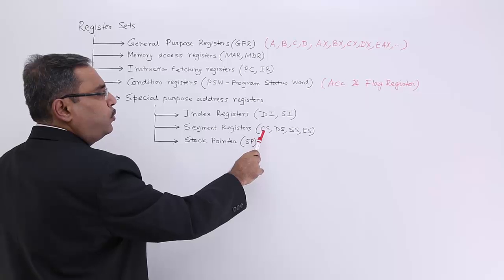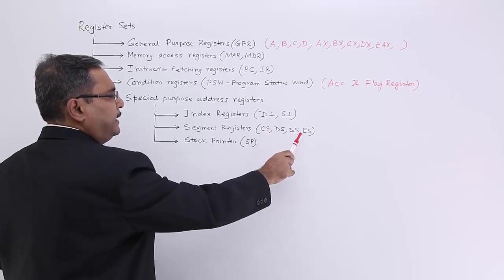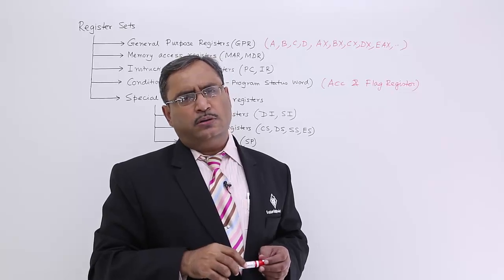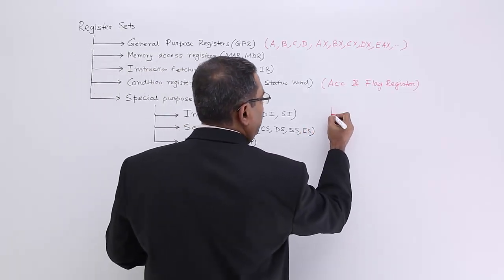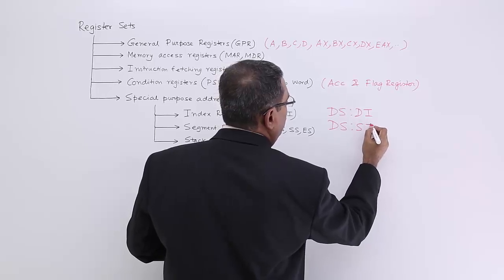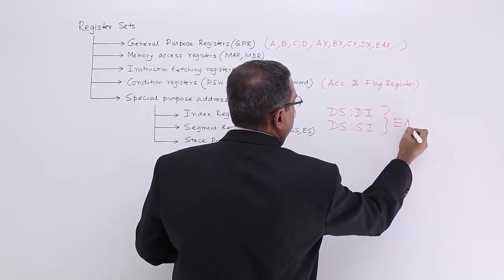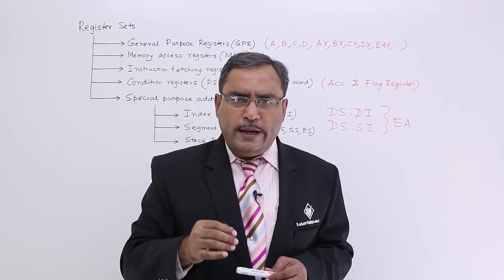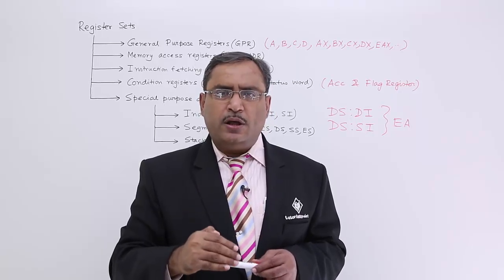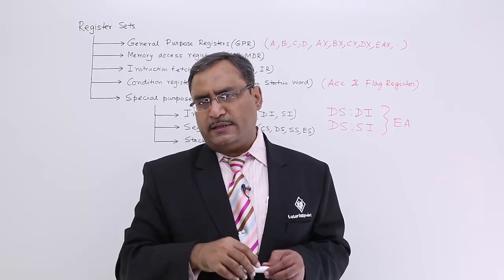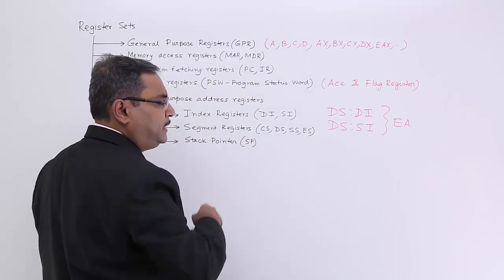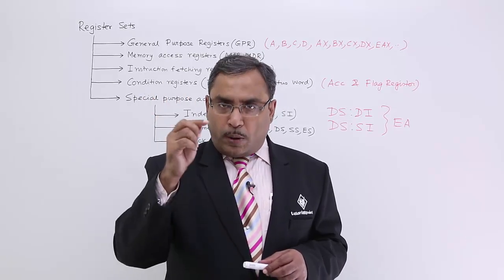Segment registers include code segment, data segment, stack segment, and extra segment. In some architectures they are called enhanced code segment, enhanced stack segment, and so on. For example, data segment colon DI, or data segment colon SI, will give you the effective address. The segment registers hold the base address of the segment, and the index registers hold the offset or displacement from that base address. Combining them gives you the physical or effective address. We also have the stack pointer (SP) which points to the topmost address of the stack.